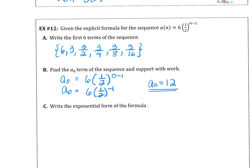And then finally, write the exponential form of that formula. The f of n is 12 times 1 half to the n power. You could also translate this as f of n is 6 times 1 half to the n minus 1 power.